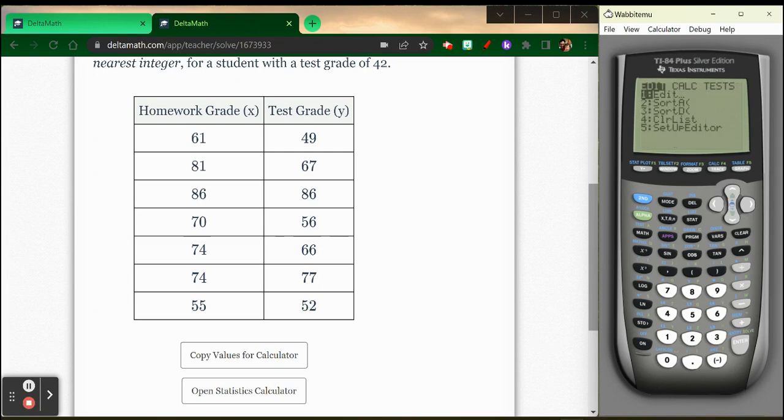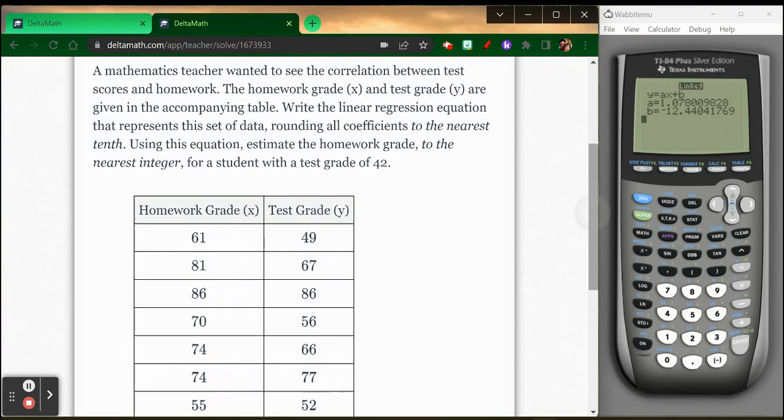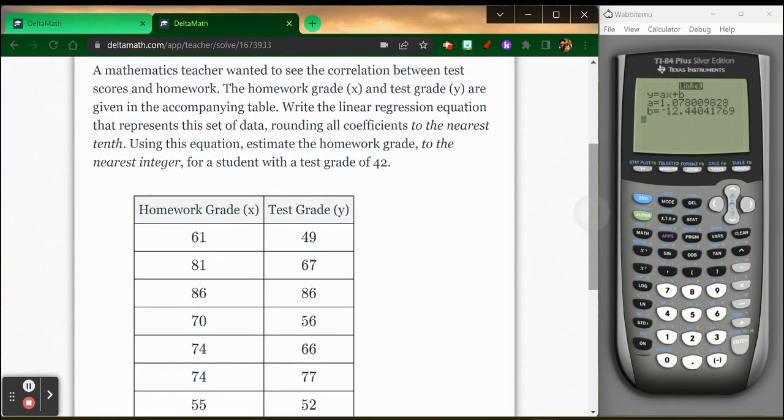Now I can use this information. So I'm going to hit stat. Right click to calculate. The fourth one down says linear regression. So I'm going to hit four for linear regression. Everything is in there. List one, list two. Enter. And it calculates it out for me. So going back to my problem, it wants me to round to the nearest tenth on this one.